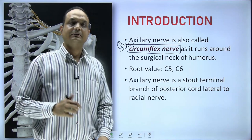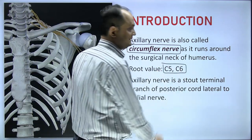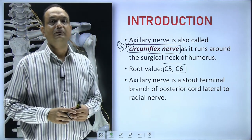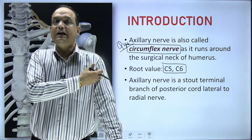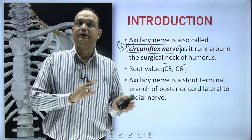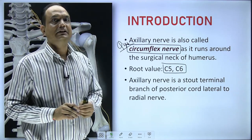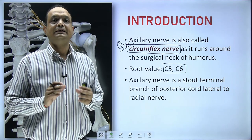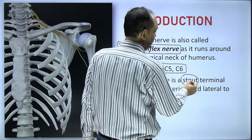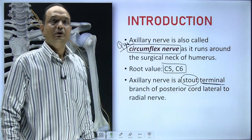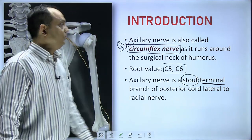The root value of the axillary nerve is C5 and C6. The axillary nerve is a branch of the posterior cord of the brachial plexus, which enters into the axilla and forms the lateral cord, medial cord, and posterior cord. The axillary nerve is a thick, stout terminal branch of the posterior cord.